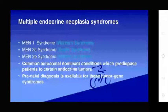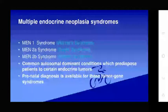Multiple endocrine neoplasia (MEN) syndromes are common autosomal dominant conditions that predispose patients to certain endocrine tumors. They include MEN type 1 (Werner syndrome), MEN type 2a (Sipple syndrome), and MEN type 2b (Williams syndrome). Prenatal diagnosis is available for these tumors.